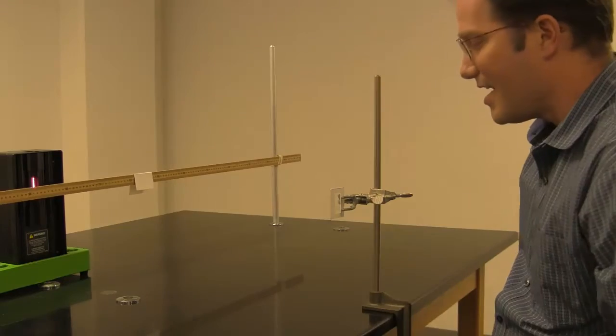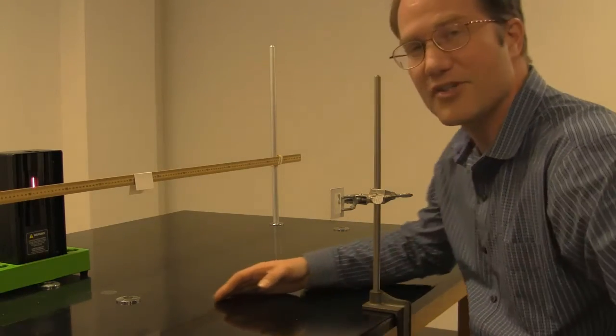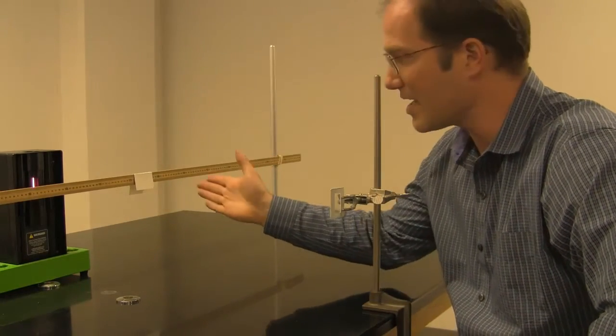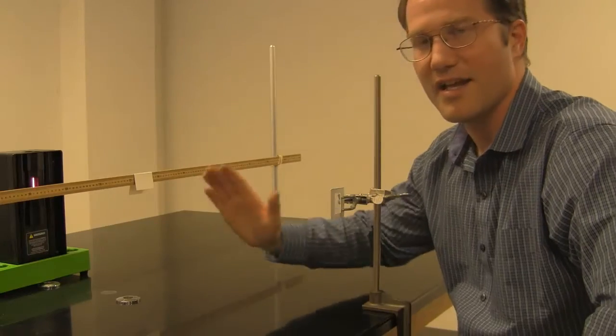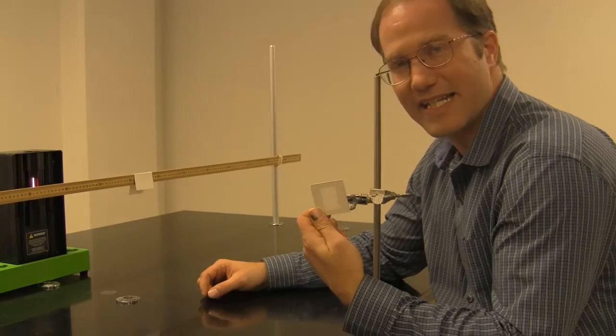So, now I'm looking through this diffraction grating, and I'm getting values of theta, so I should be able to calculate the wavelength of light that's making an angle of theta with the central line. But, I can't. The problem is, I don't know what d is.